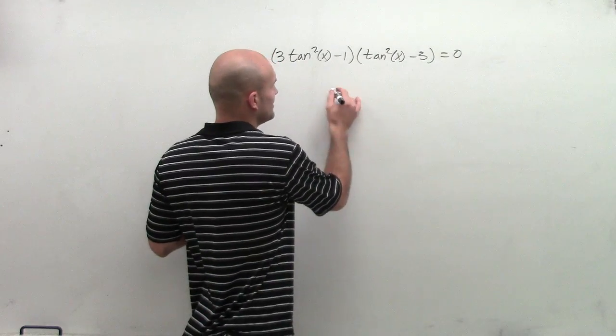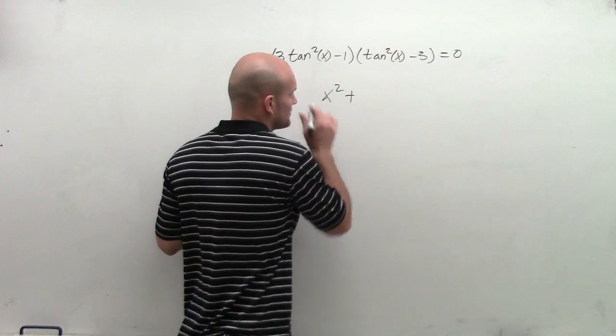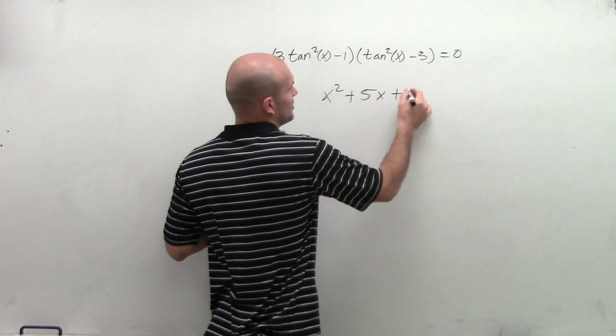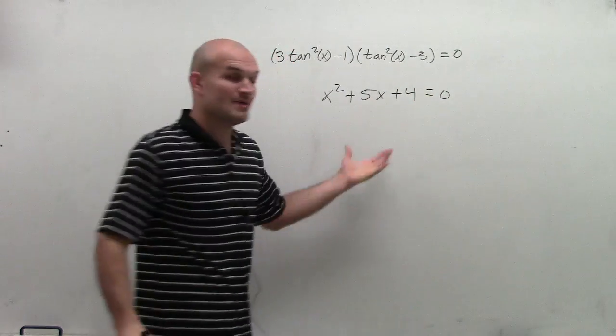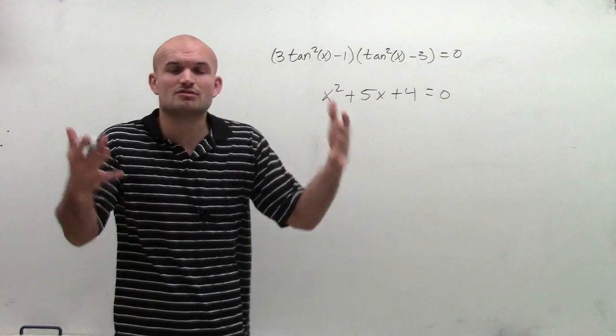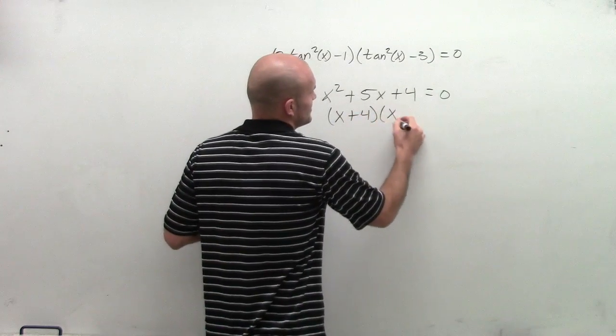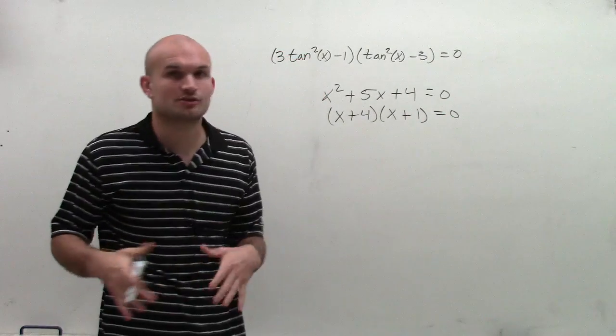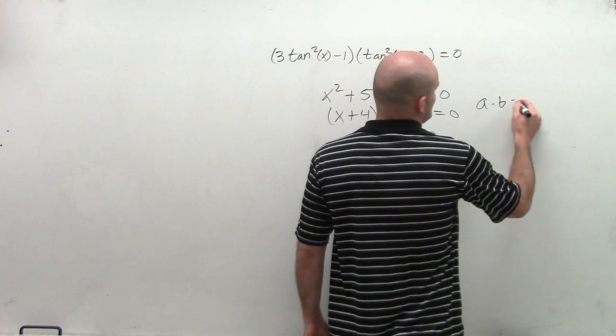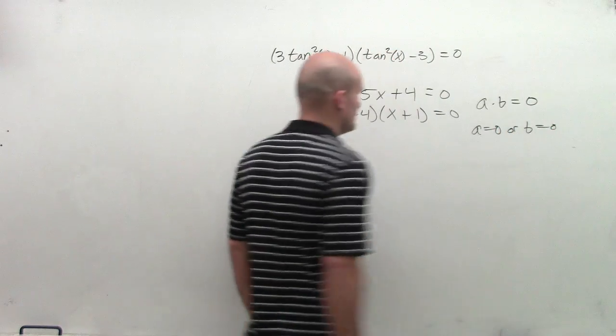But what happened when we dealt with quadratics? Let's say x squared plus 5x plus 4 equals 0. Remember, when we got to quadratics and something like this, we couldn't just simply subtract 4 and divide, because there's two variables. So what we did is we worked on factoring. And the reason why factoring was so important is because what it allowed us to do is represent the zero product property. And the zero product property states that any two numbers, when equal to 0, then A equals 0 or B equals 0.